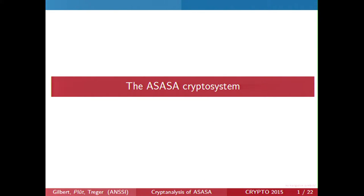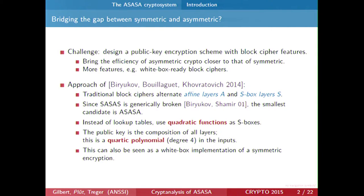So what kind exactly of block cipher is this? In this setting, the challenge is to design a public key cipher which is close in terms of complexity to a private key block cipher — to mix public key features with private key features in order to bring the efficiency closer to each other. The approach was to look at the classic structure of block ciphers that alternate diffusion with substitution: affine layers and S-box layers. Since the structure SASAS has been broken for 15 years now, the smallest still unbroken candidate was Azaza.